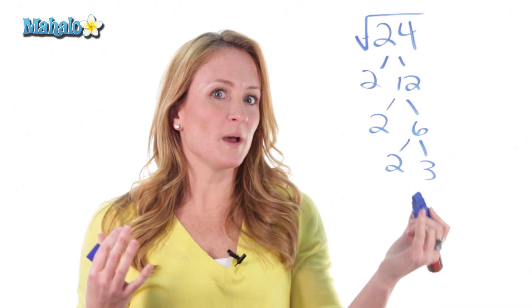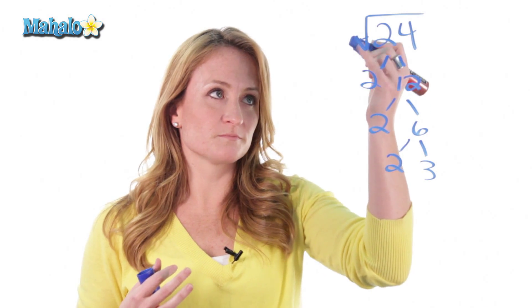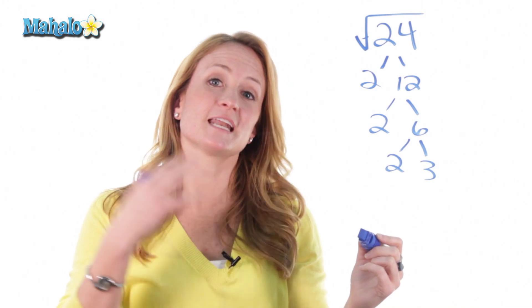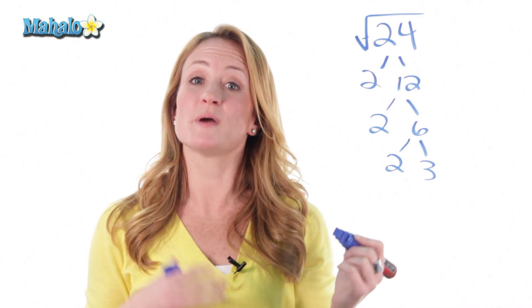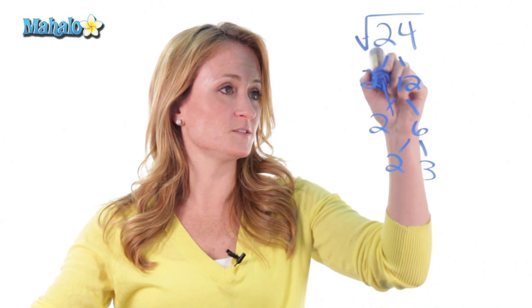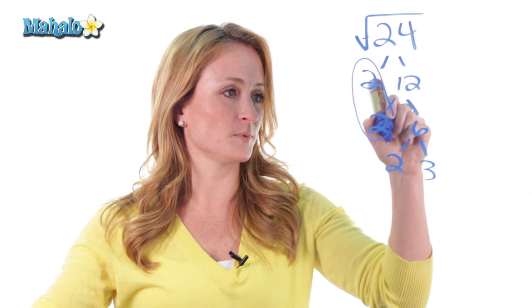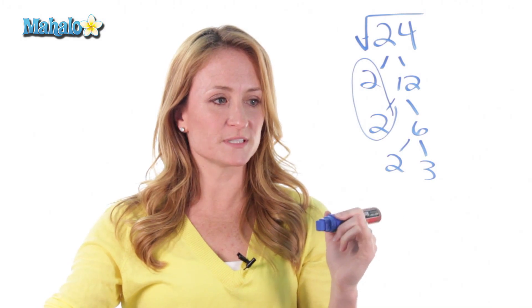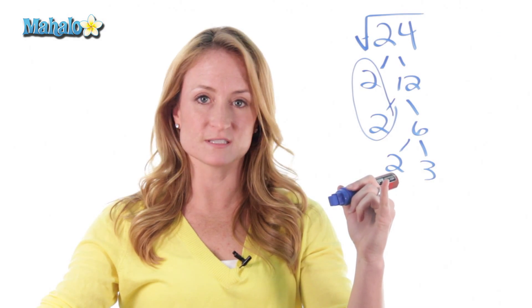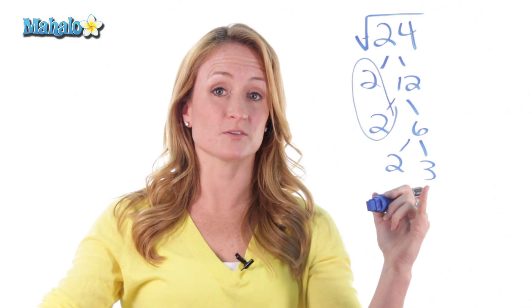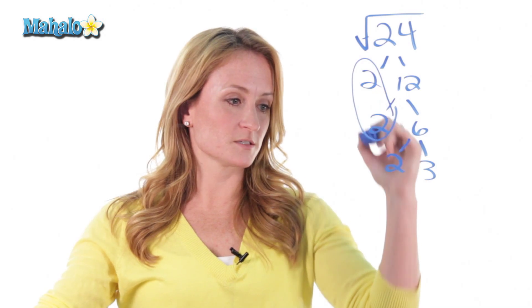So remember the rule: the square root is considered a trap, and it has to have a partner to get out of the trap, so pair them up. So we have these 2's pairing up, and those are already paired up and taken, so this 2 doesn't have a partner. This 3 doesn't have a partner either.